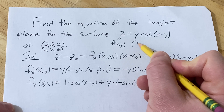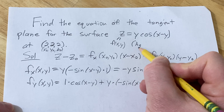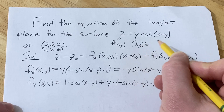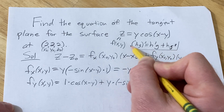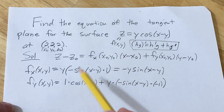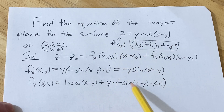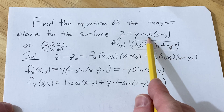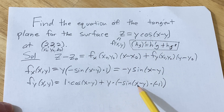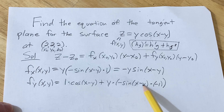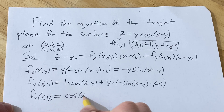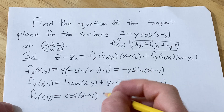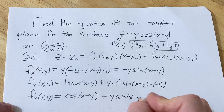Recall the product rule: if you have functions h and g, it's the derivative of the first times the second, plus the first times the derivative of the second. So here it's the derivative of the first times the second, plus the first times the chain rule derivative. The derivative of cosine is negative sine — you take the derivative of the outside, evaluate it at the inside, and multiply by the derivative of the inside. The derivative of x is 0 and the derivative of negative y is negative 1. So we get cosine of x minus y, and here we get a negative times a negative, which turns into a plus, giving us sine of x minus y.